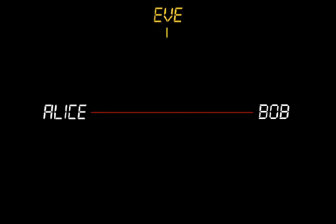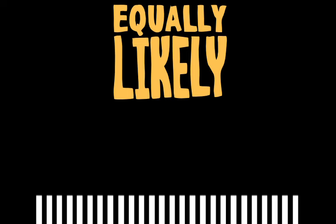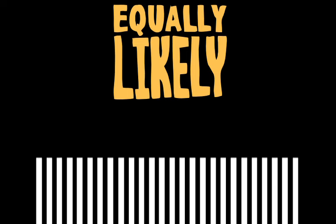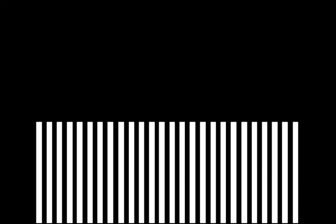Now Eve will have a problem because the resulting encrypted message will have two powerful properties. One, the shifts never fall into a repetitive pattern. And two, the encrypted message will have a uniform frequency distribution. Because there is no frequency differential and therefore no leak, it is now impossible for Eve to break the encryption.